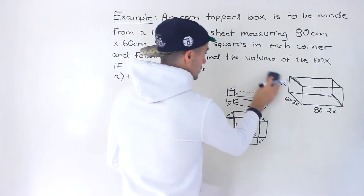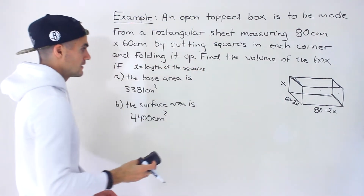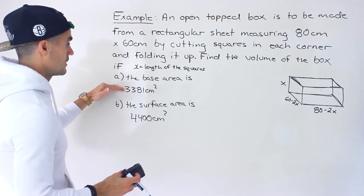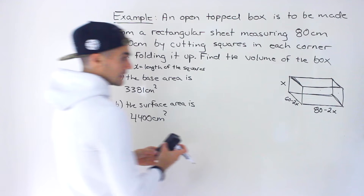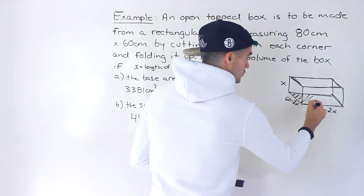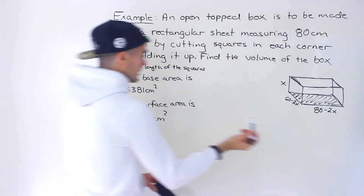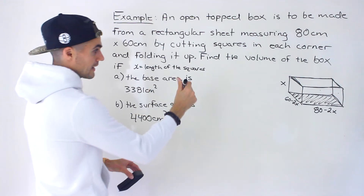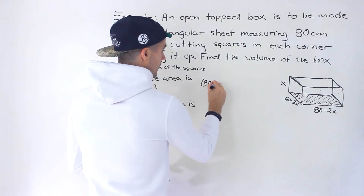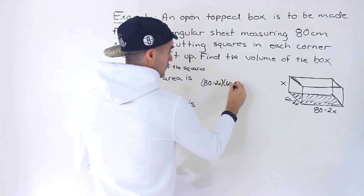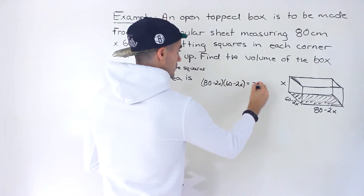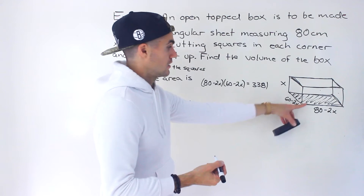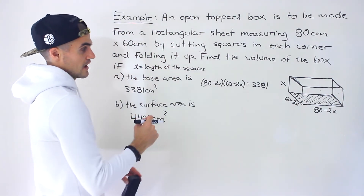Now that we have those dimensions, we can go into finding what we're looking for. In part A, we're told the base area is 3,381 centimeters squared, meaning this base area is going to be this amount. We know the length is 80 minus 2x and the width is 60 minus 2x, and we know that area has to equal 3,381. Length times width gives us the area of a rectangle, so now we just have an equation to solve.